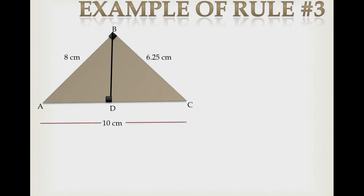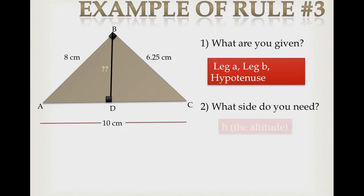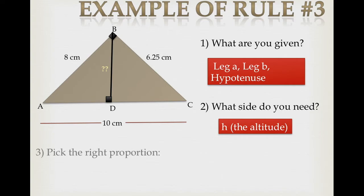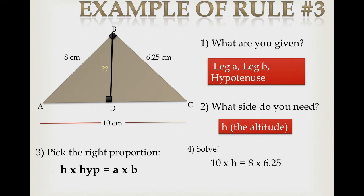Here's an example: I haven't given you anything except the legs and the hypotenuse. You have the legs, you have the hypotenuse, you don't know M, N, or the altitude — and I'd like you to find the altitude. Since we don't have M and N, we use rule three: H times hypotenuse equals A times B. The hypotenuse is 10, A is 8, B is 6.25. So 10H equals 50; divide both sides by 10 and you get BD equals 5 centimeters.